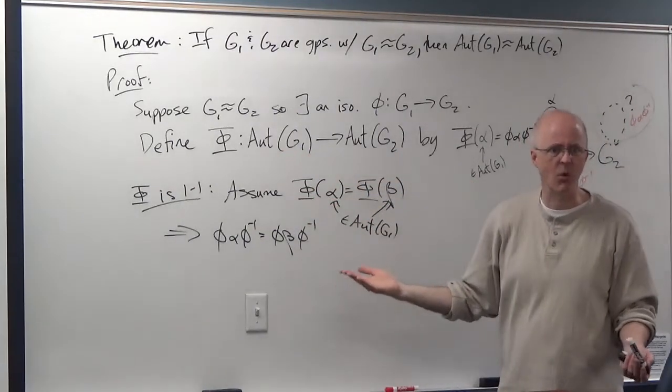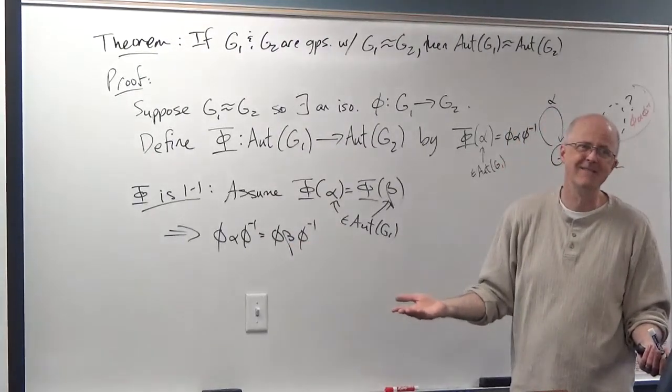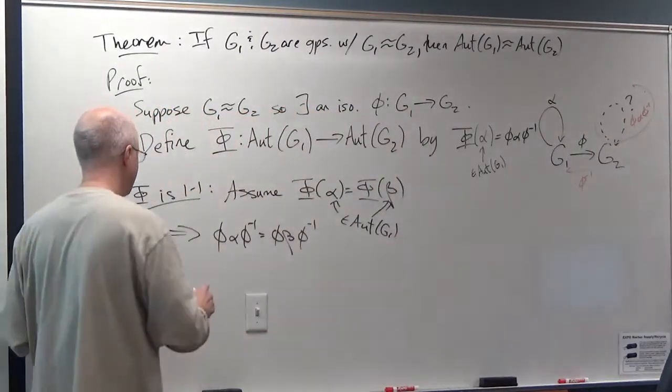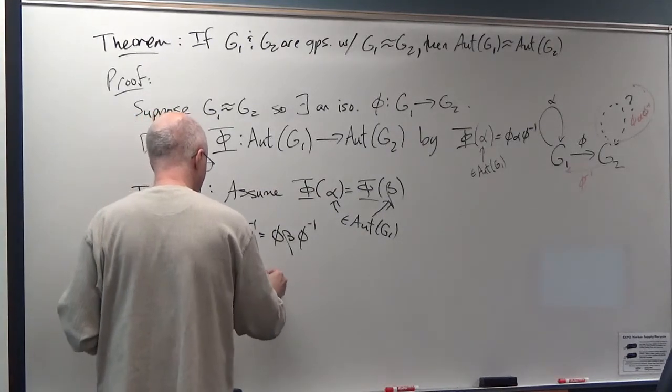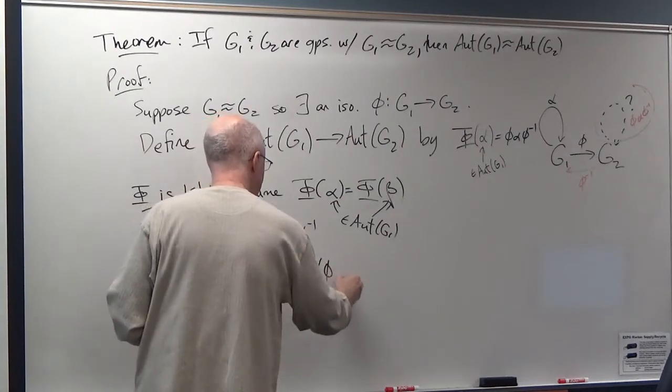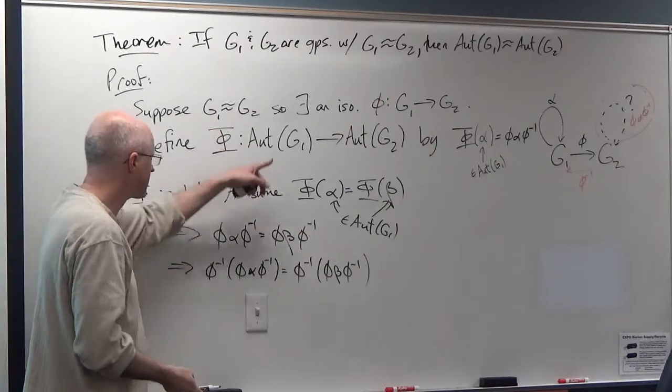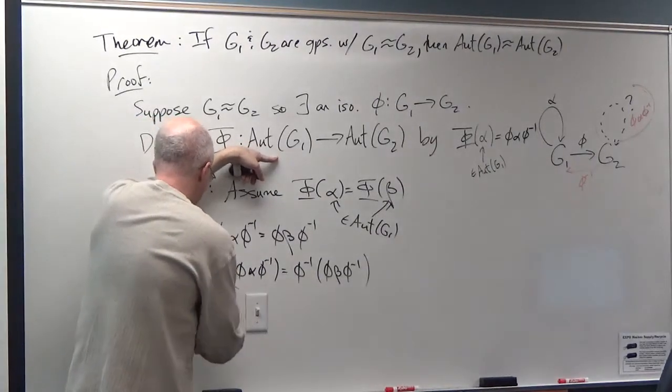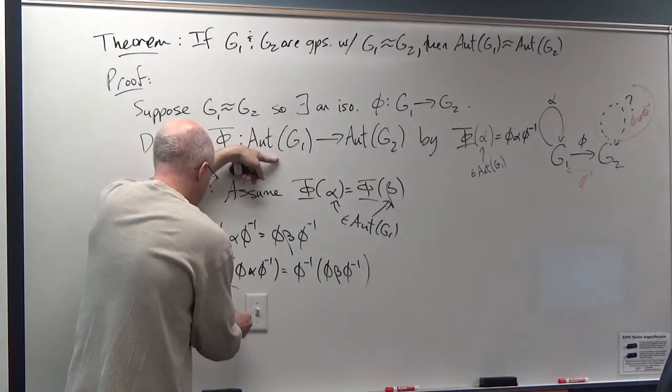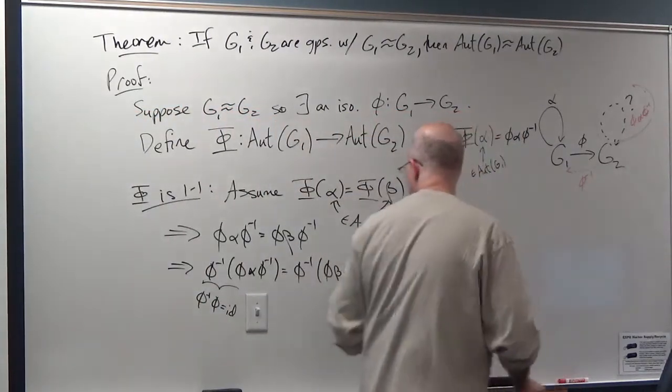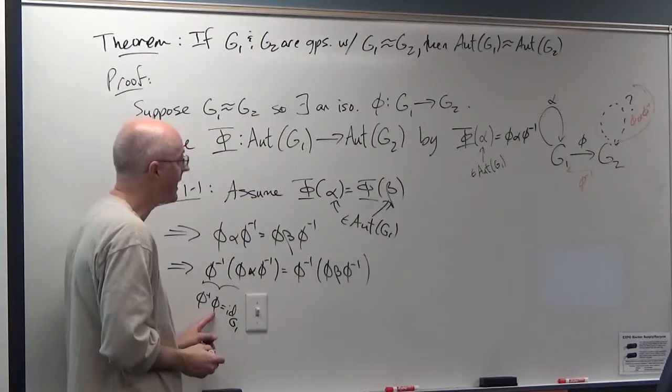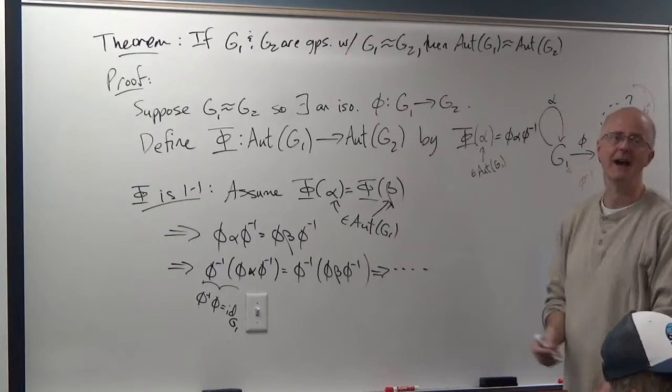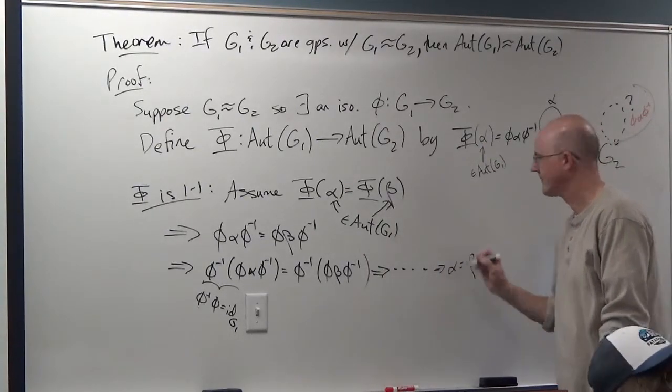So does the left and right cancellation law work here? I'm just composing functions that are not in the same group here. It still does work. You still can compose. You can, for example, left compose by phi inverse. Even though phi and phi inverse are not in this group here, you can still do the function composition. And the associative law still works. And phi inverse phi is still the identity map. We call it id. It would be the identity map of G1, because you apply phi first and then phi inverse. I won't show the details. You could also apply phi on the right side, ultimately to get to alpha equals beta. So capital Phi is one-to-one.